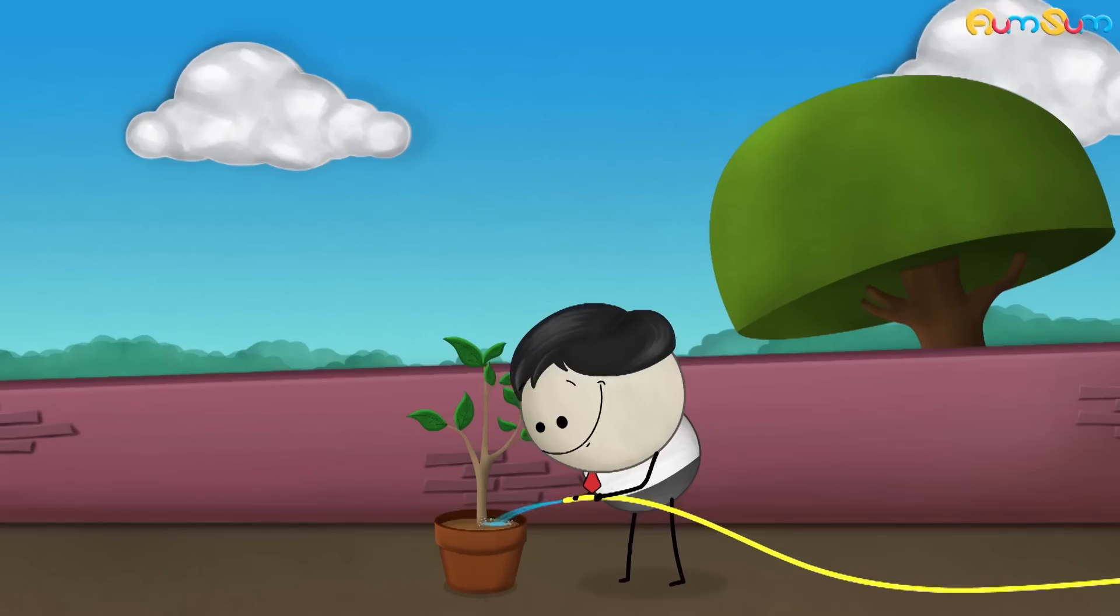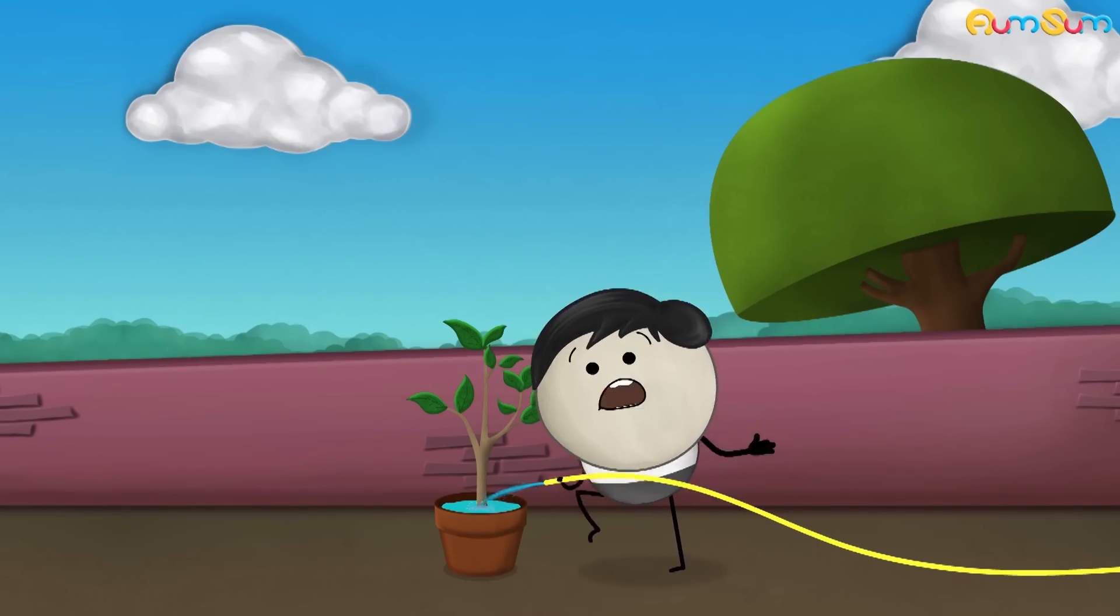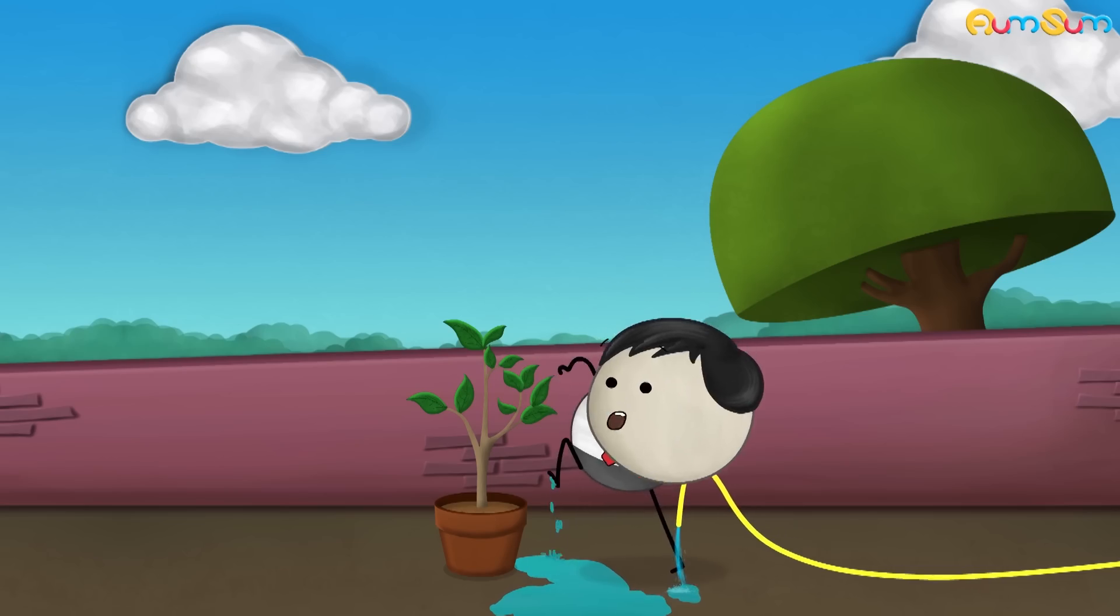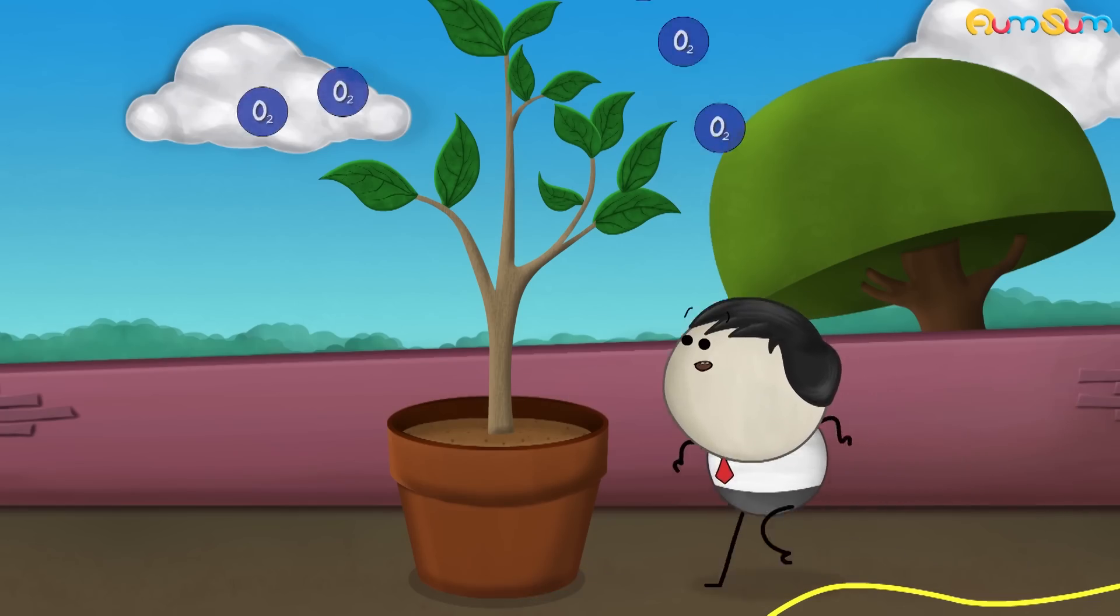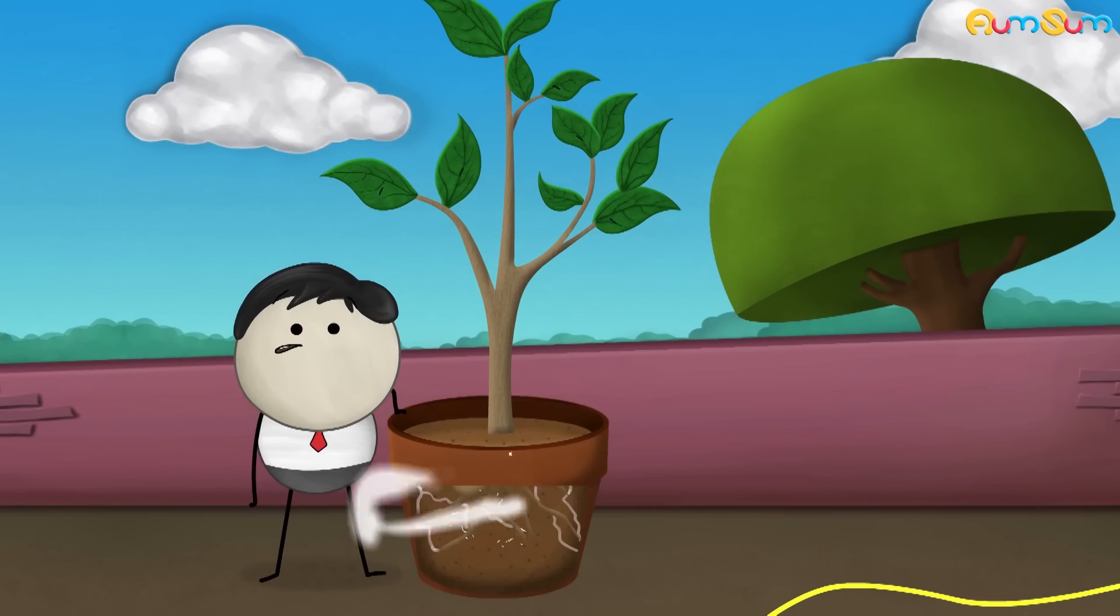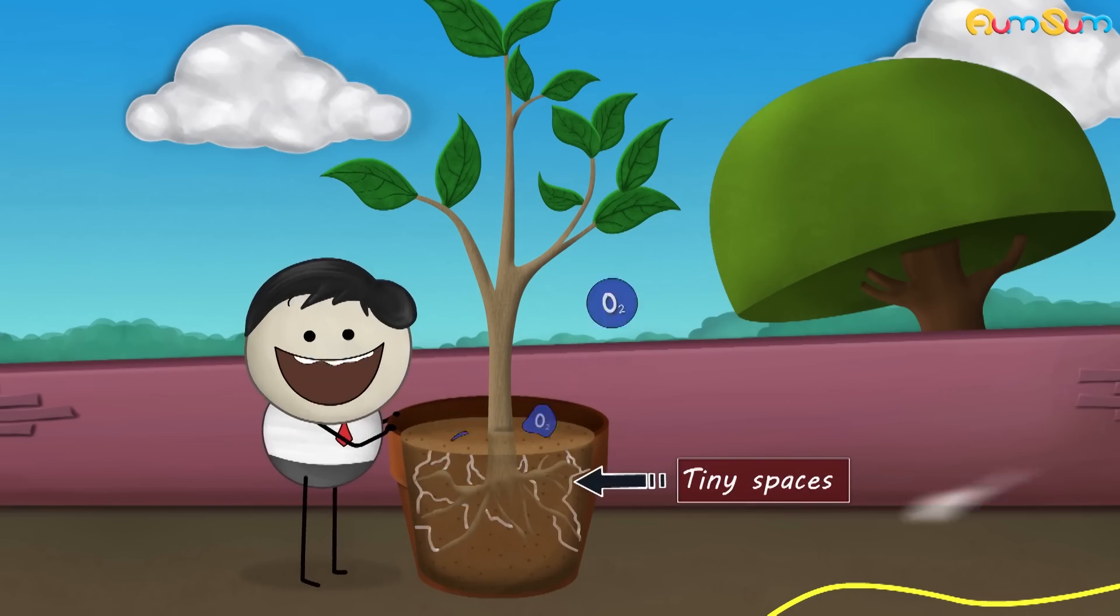Respiration. Why should we not overwater potted plants? Well, duh. It's because the water will overflow and make the floor dirty. Nah. Leaves of a plant take oxygen from the air present in the atmosphere. While the roots, being buried in the soil, take oxygen from the air present in tiny spaces of the soil.